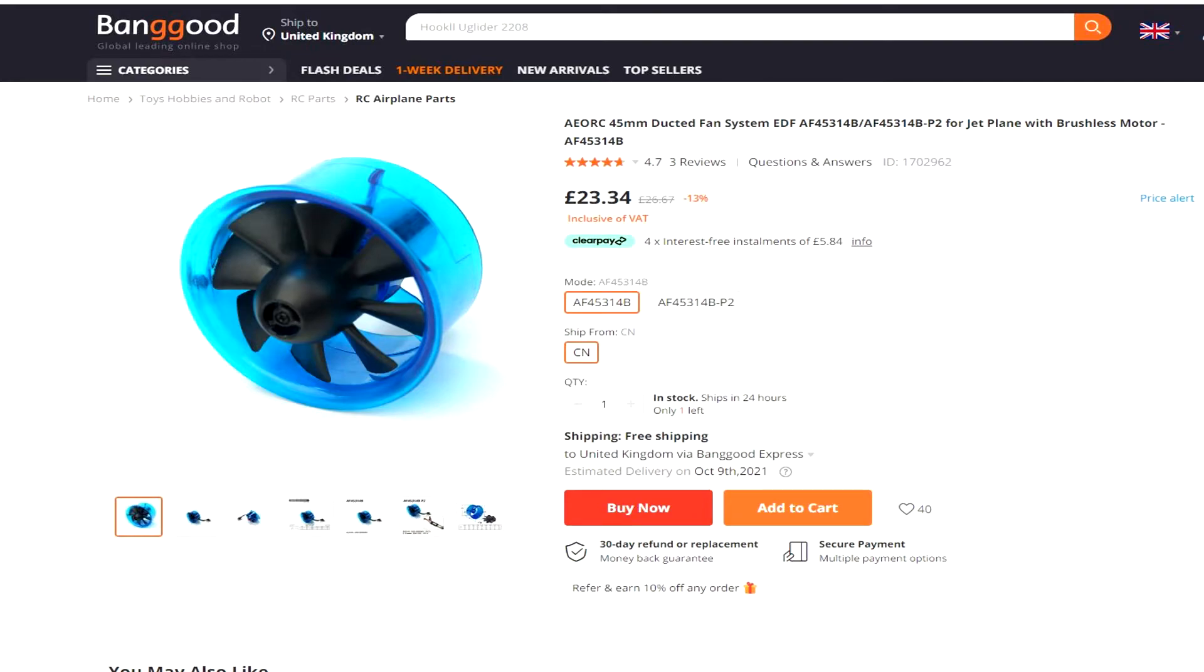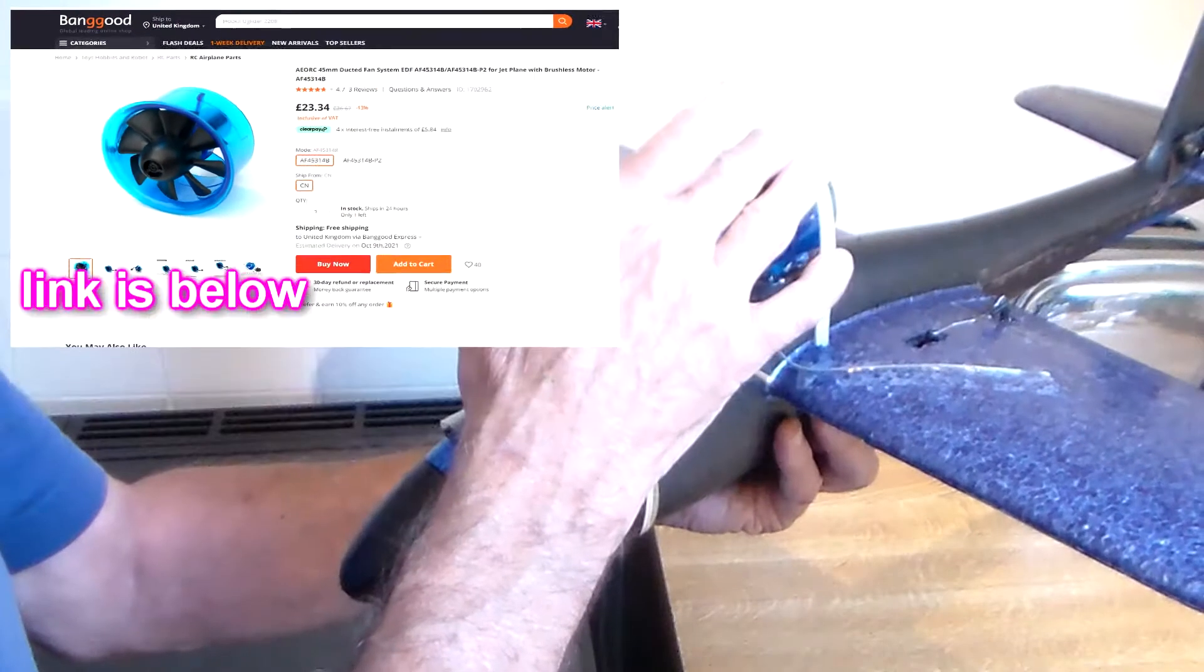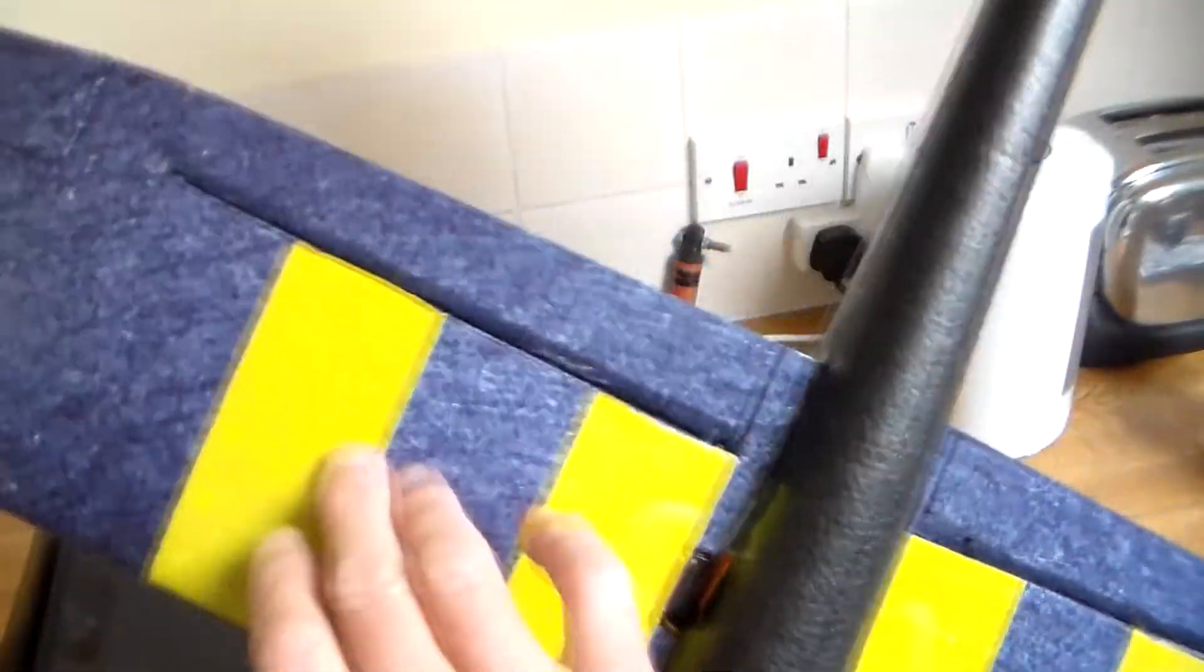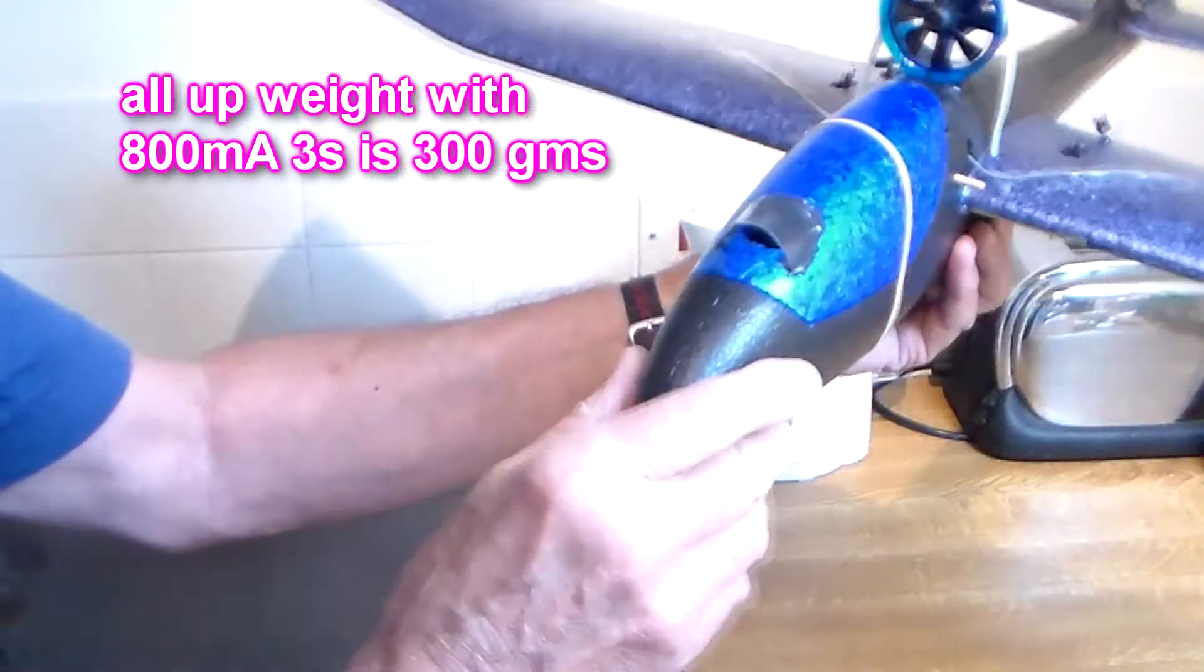First thing to notice is I left the dihedral which made it very relaxing and easy to fly. Had plenty of power with this 45mm EDF. Partly because I've kept it really light. I've got no carbon in it at all. That kept the weight down. Probably my prettiest and best build yet.